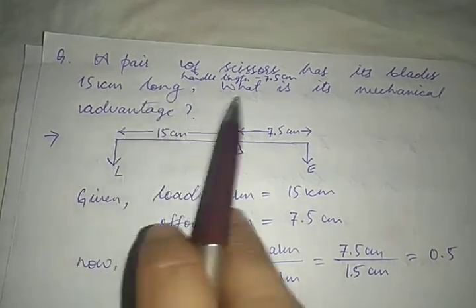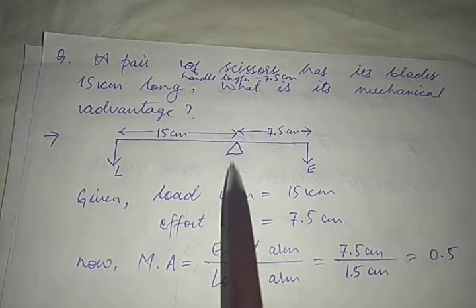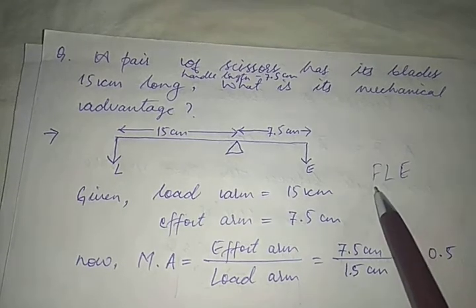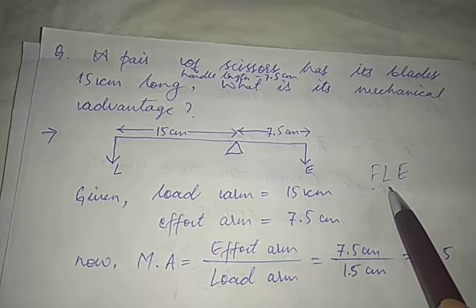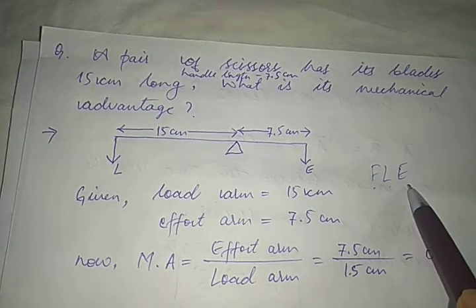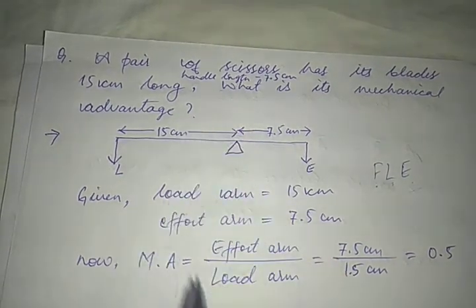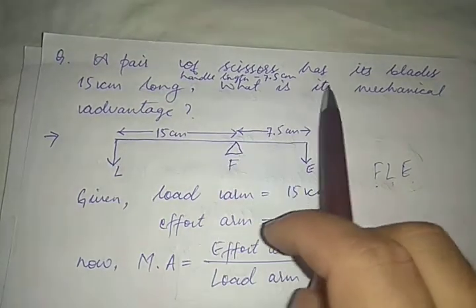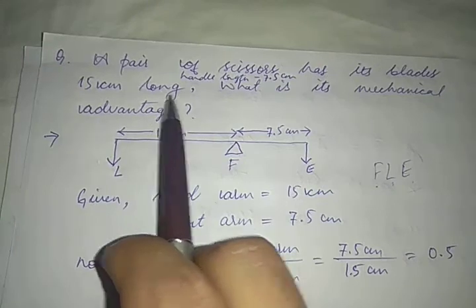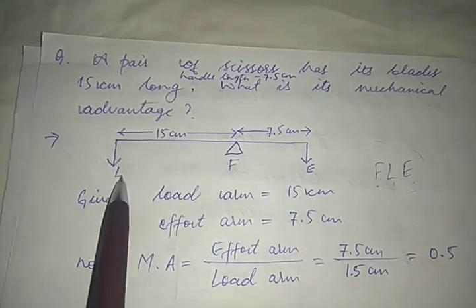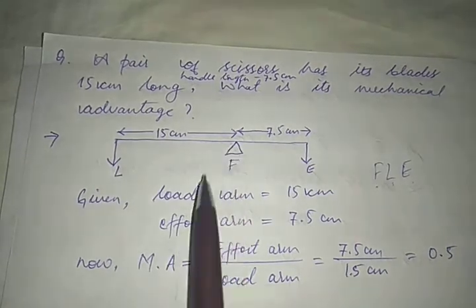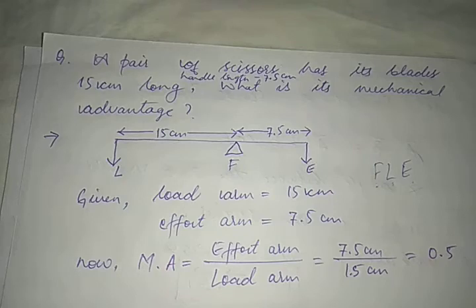A pair of scissors is a first class lever. In a first class lever, the fulcrum is in between — remember FLE: first class has fulcrum in between, second class has load in between, third class has effort in between. Since scissors is a first class lever, the fulcrum is in between. The length of the blade is the load arm because it is on the blades that we place the cloth to be cut, and the handle length is your effort arm.